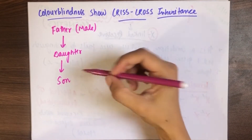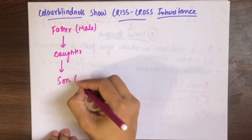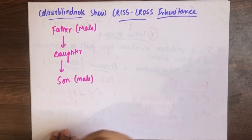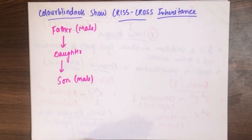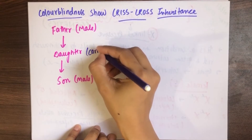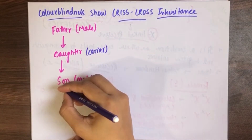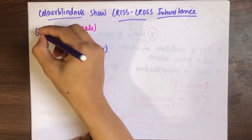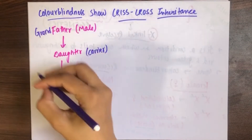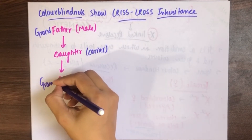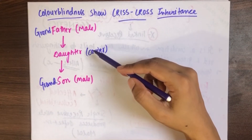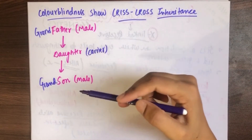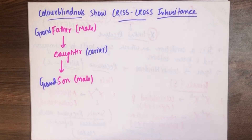Criss-cross का मतलब है: male से directly male में disease नहीं जा रही है. पहले daughter में जा रही है, daughter carrier बन रही है, और फिर वो daughter आगे disease को transmit कर रही है. तो ये बन जाएंगे grandfather और ये बन जाएगा grandson. Grandfather से directly son में disease नहीं आई — daughter में आई, और daughter ने आगे grandson को ये disease दी. It is known as criss-cross inheritance.